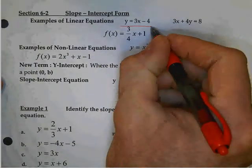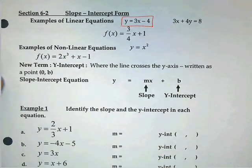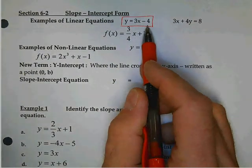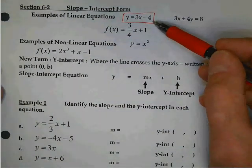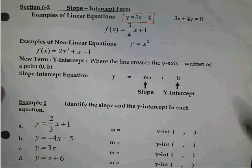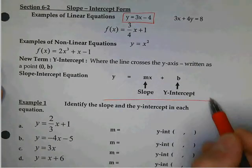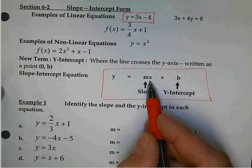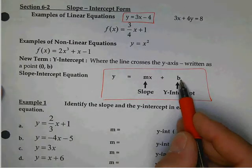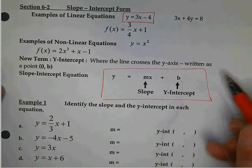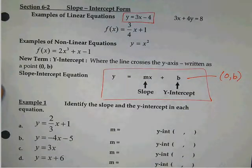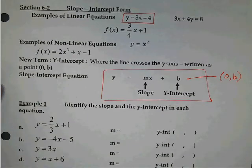When we graph a line, the easiest form of an equation to be in is y equals a number times x plus or minus a number. We call this form slope-intercept form, and the reason it's called that is because of our general equation down here in the box. The number in front of the x is always called the slope, and the number back here, the b, is the y part of the y-intercept. And so that's always written 0 comma b.